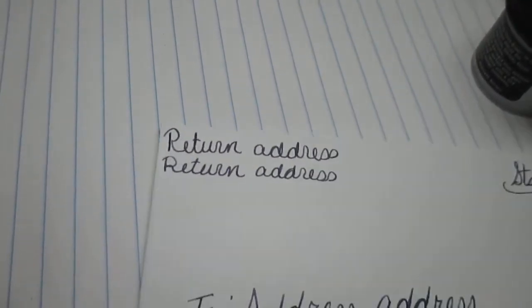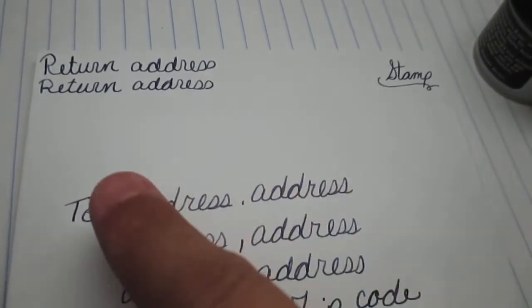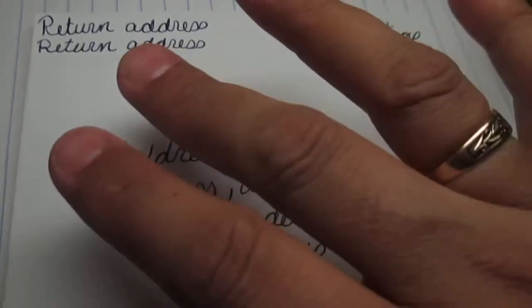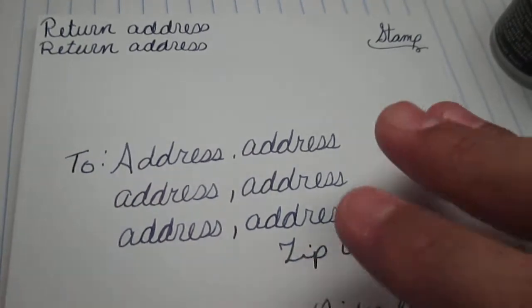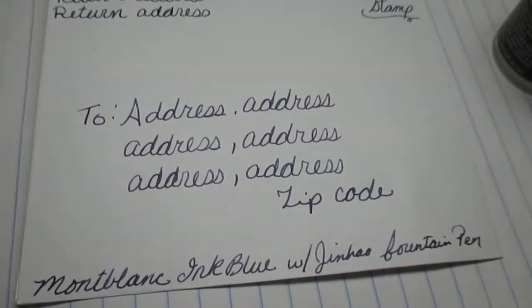What I did is kind of a basic format of you going to mail a letter, so your return address, your address to where your stamp would go, and then the ink and the pen I'm using.